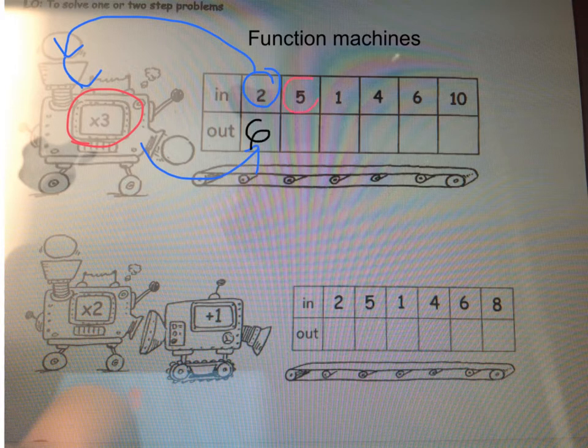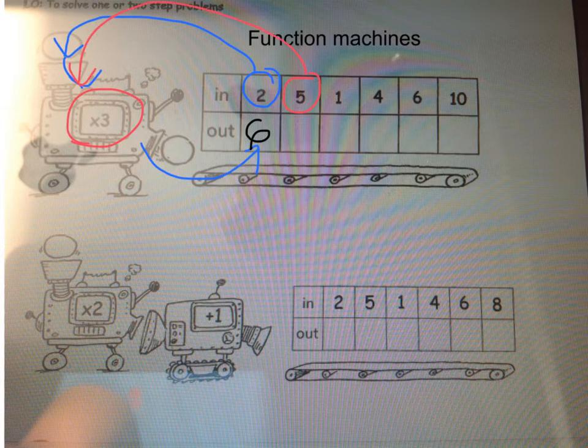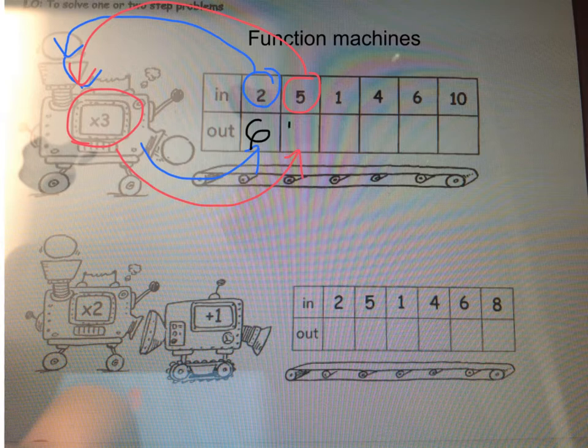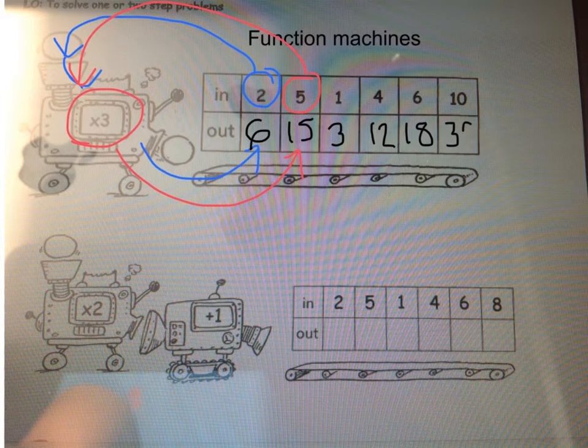Now, we'll do the same with 5. So, 5 goes into the machine, it gets multiplied by 3 and comes back out as 15. 1 goes in, gets multiplied by 3, and comes out as 3. 4 goes in, comes out as 12. 6 goes in, comes out as 18. And 10 goes in and comes out as 30.